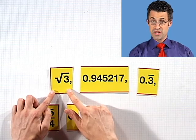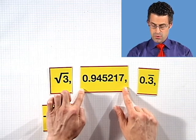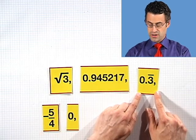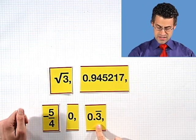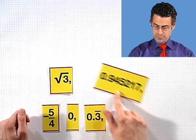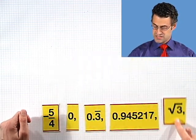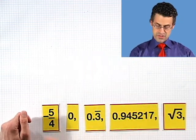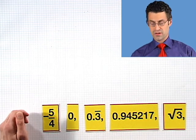Well this is between 1 and 2. This is just a little teeny bit under 1. And this is around 0.3. So the 0.3 comes next. Then comes the 0.94 stuff. And then comes this mysterious number that we know is bigger than 1. So there's a way of ordering the real numbers.